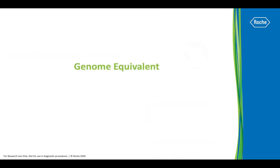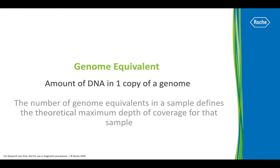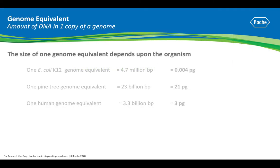Genome equivalent is the amount of DNA in one copy of the genome. The number of genome equivalents defines your theoretical maximum depth of coverage. The amount of genome equivalents corresponds to the size of a genome. For example, E. coli K-12 at a genome size of 4.7 million bases, genome equivalence equals 0.004 picograms.